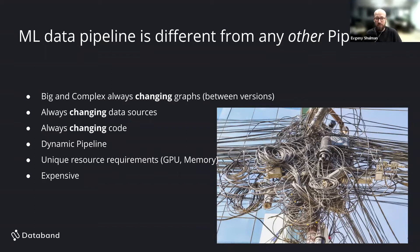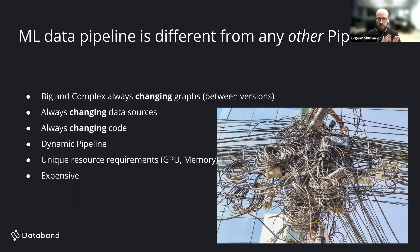ML pipelines combine many changing data sources — that's a significant property. Unlike regular transformations that work once written, ML requires constant improvement: data science teams work hard to improve precision and recall week by week, leading to many code changes and library updates. We also have dynamic pipelines and unique resource requirements like GPU nodes and high memory.